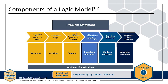The logic model starts with a problem statement, which is a short description of the problem that the program is designed to address. Chapter 2 of this module describes how to draft a problem statement. The three components in yellow — resources, activities, and outputs — describe how the program is structured and operates, answering the question: what is the program? Chapter 3 of this module further describes resources, activities, and outputs. The three components in blue — short-term, mid-term, and long-term outcomes — describe what the program is expected to accomplish, answering the question: what outcomes do you expect from the program? Chapter 4 of this module describes outcomes in greater detail.